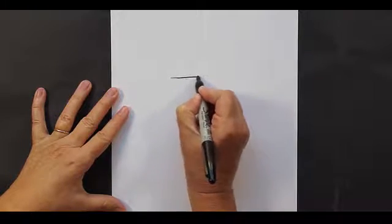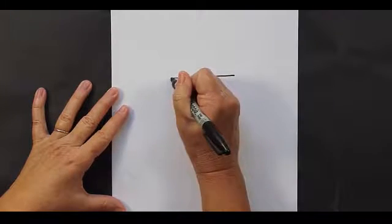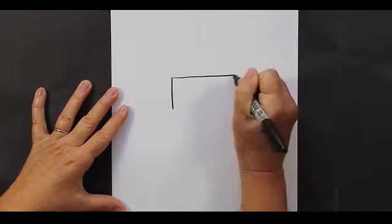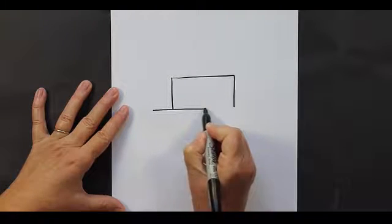We are going to start out with a straight line that's maybe about three inches long. Coming down from that straight line we are going to make two vertical lines, and then we are going to make another straight line coming across.